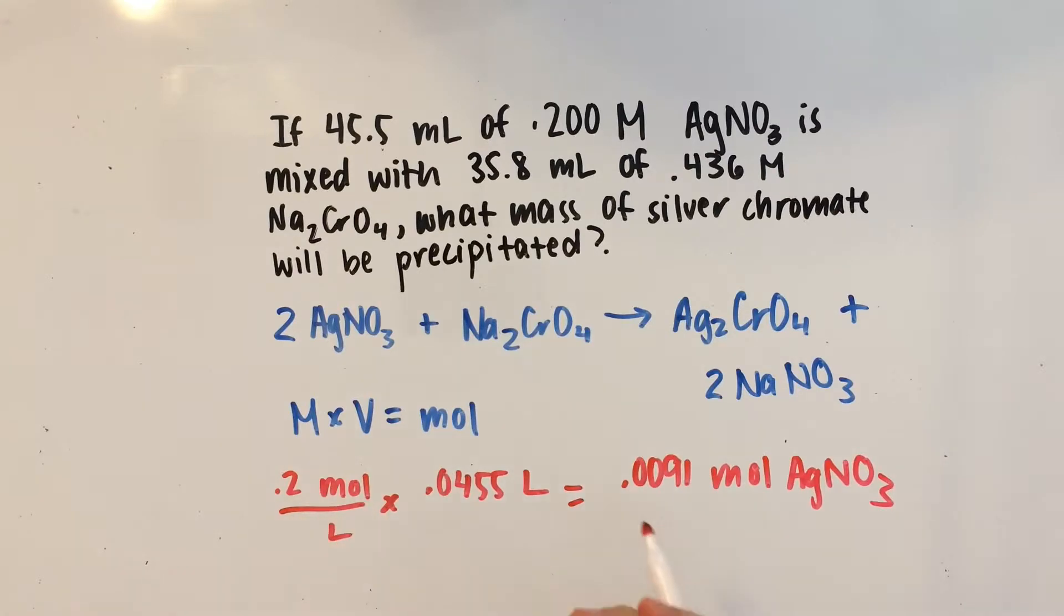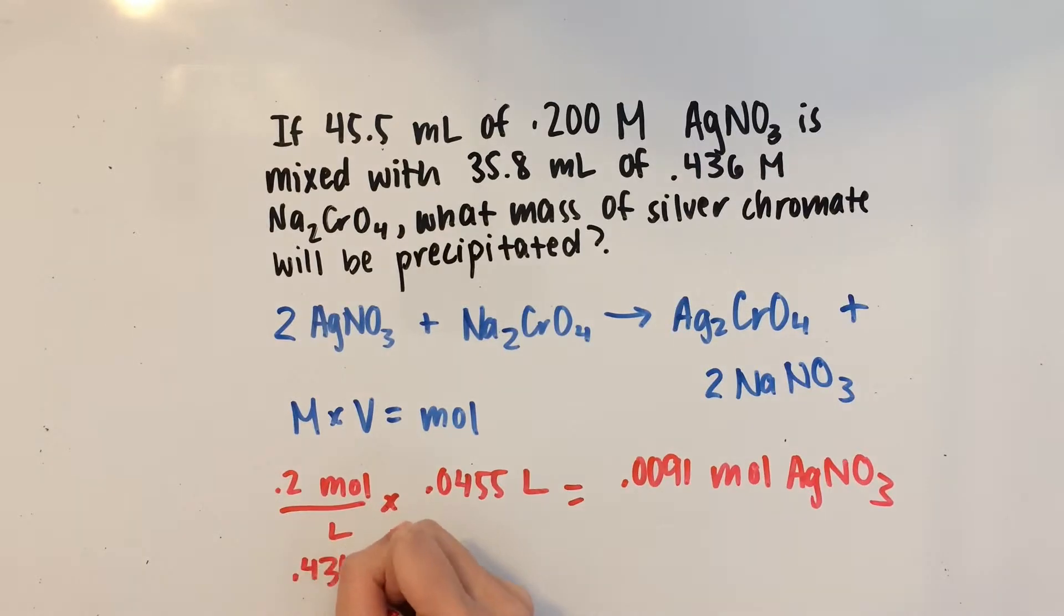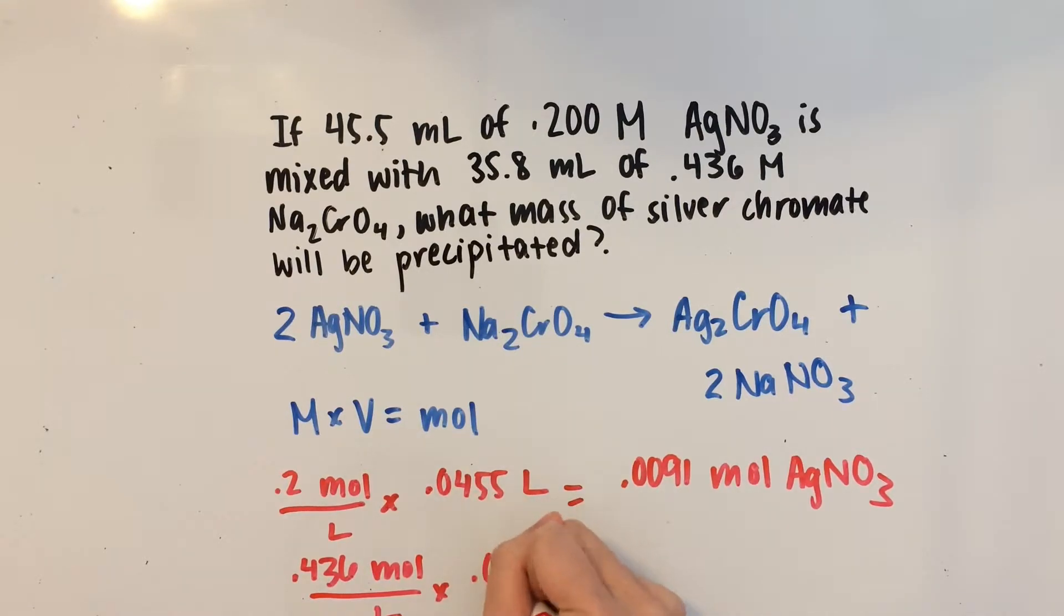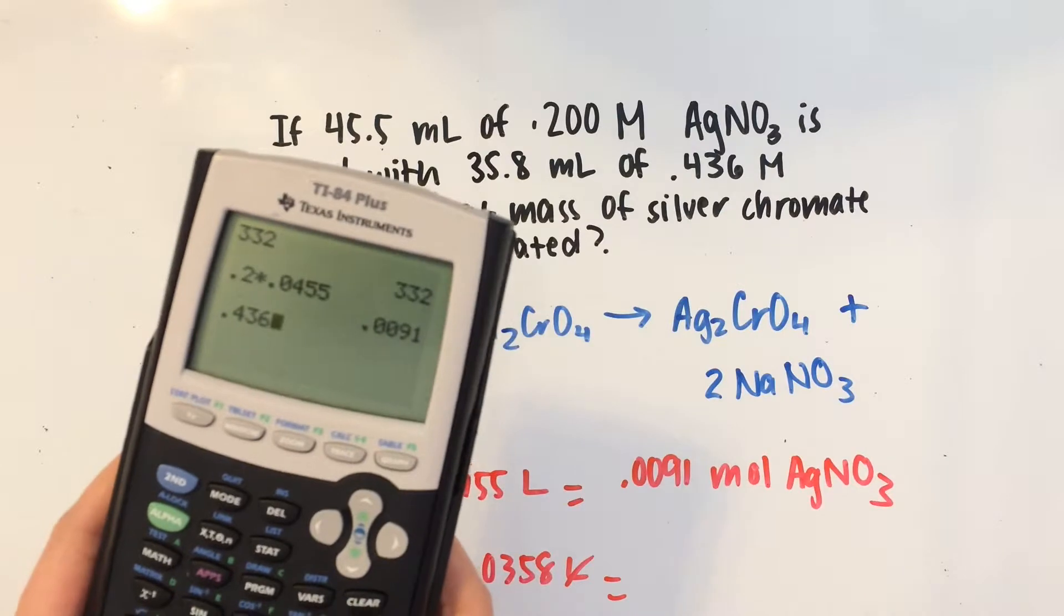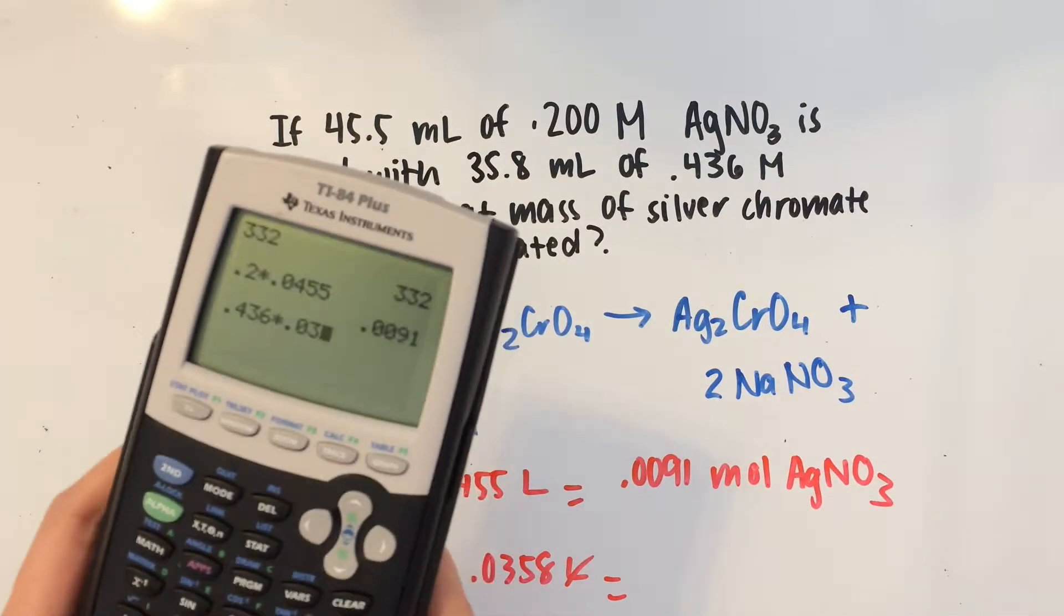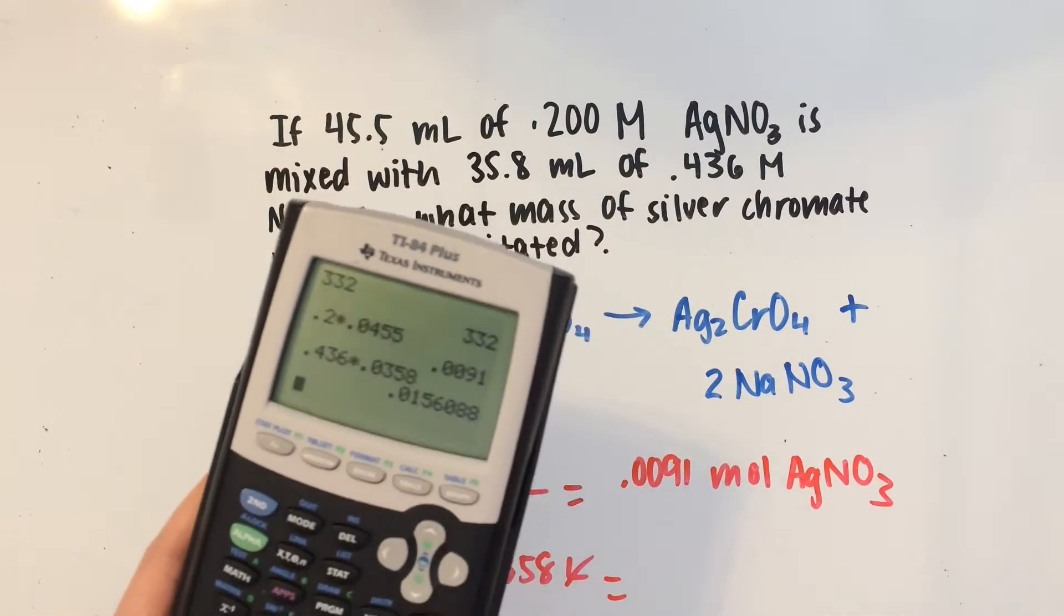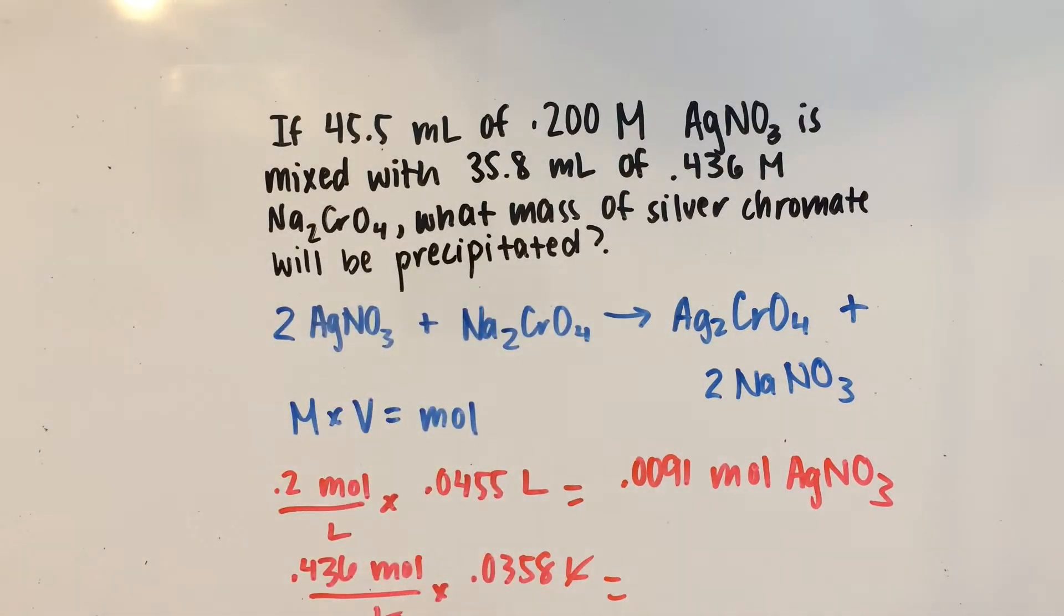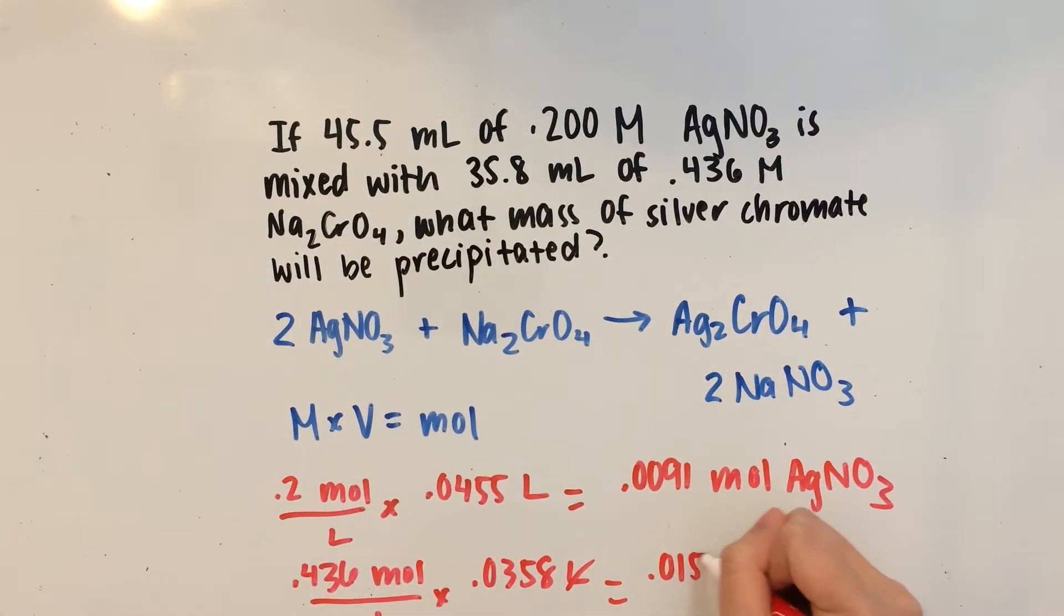Now, let's use this same formula for Na2CrO4. So we have 0.436 molar, and we're going to multiply that by 0.0358 liters. Liters cancels out. And what do we get? 0.436 times 0.0358 gives you roughly 0.0156 moles of sodium chromate.